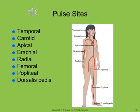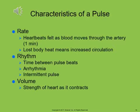This figure shows the pulse sites. The carotid artery is most commonly used in emergencies to check the pulse during CPR. The brachial pulse is the artery that is felt and heard when a blood pressure is measured. The characteristics of a pulse are measured by rate, rhythm, and volume. Because the body must balance heat loss by increasing circulation, the pulse rate is proportionate with the size of the heart.